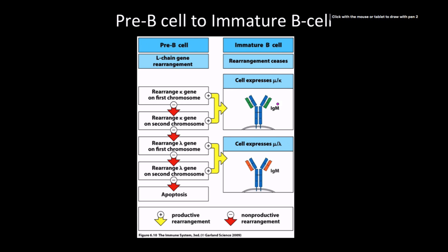Assuming it passes the surrogate light chain test, we move on to rearranging our light chain genes. The first thing we do is kappa. Remember that kappa and lambda are functionally equivalent—there's no difference between the two. My personal opinion is that they arose from gene duplication as a means to make sure we don't have to kill so many of our B-cells. It's clearly an advantageous mechanism to have.